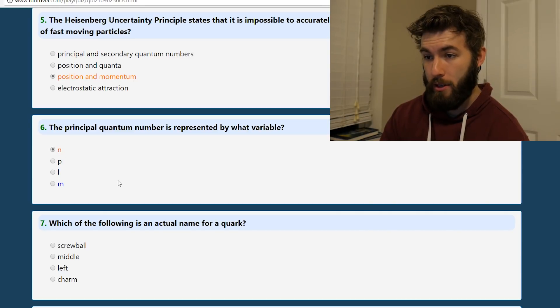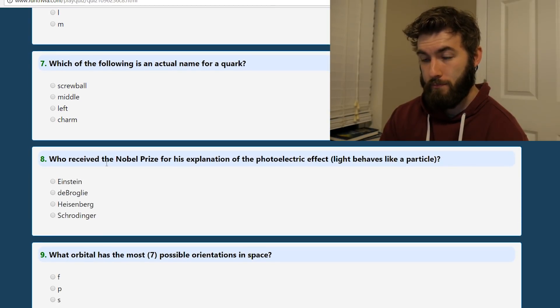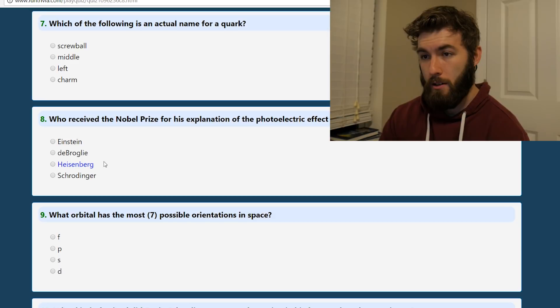The principal quantum number is represented by what variable? N. N for principal.